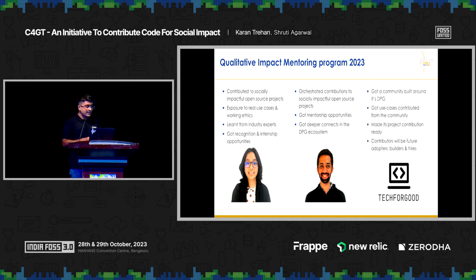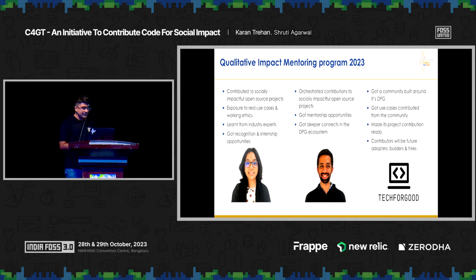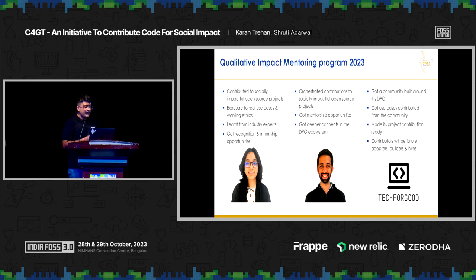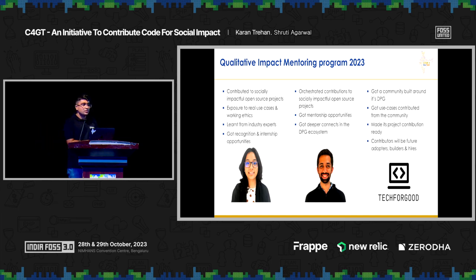For Tech for Good, they got a community built around their DPG, received use cases contributed from the community, and made their project contribution-ready — some projects were not very open source friendly before the program. Additionally, contributors become future adopters, builders, and hires, since they are now aware of those DPGs and will adopt them further, leading to more adoption for Tech for Good.